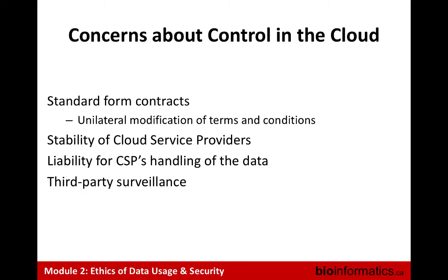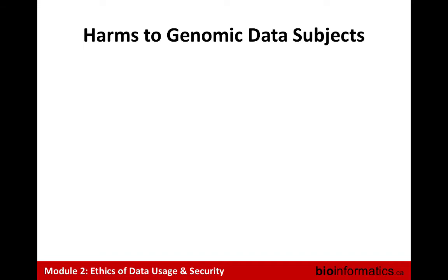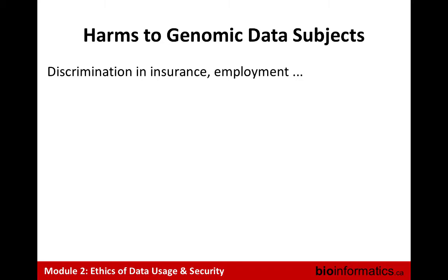Coming back to the health and genomic context specifically, most privacy and data protection law is not genomic or even health-specific, so it's not always clear how laws apply. There's debate about whether genomic data deserves special treatment — some say it's no different from any other health data, while others say there's something specific that merits a certain type of protection. One thing that comes up often is the possibility of genetic discrimination.